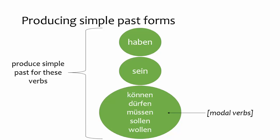In addition to being used in formal speech, the simple past is typically used instead of the compound past in standard speech with a handful of very common verbs. The verbs sein and haben, along with the modal verbs, are the most common verbs that are usually formed in the simple past rather than the compound past. This means you will need to produce the simple past for sein, haben, and the modal verbs.